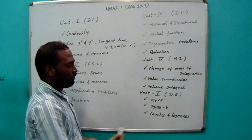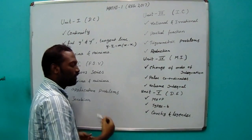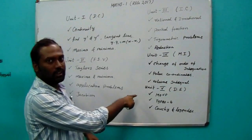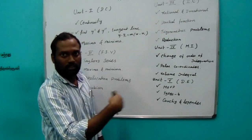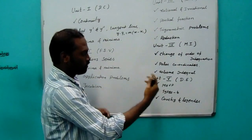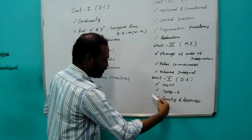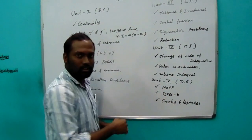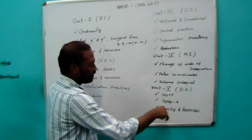Then Unit 5 is Differential Equations. In Differential Calculus, first priority is MOB. Then Type 6 — six types. MOB is separate. If you cover this, this is the 16 marks.